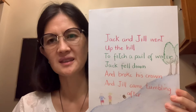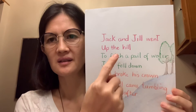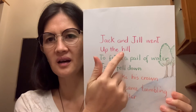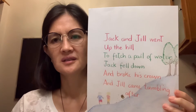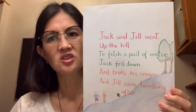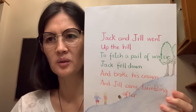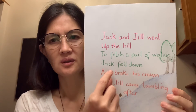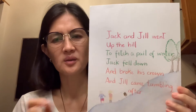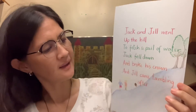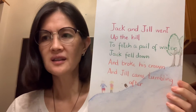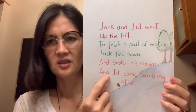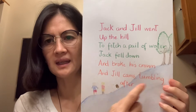You have a sight word there, right? That's familiar — 'up', up the hill. How about the next one? Jack fell down. Good. And the next one: and Jill came tumbling after, and Jill came tumbling after.